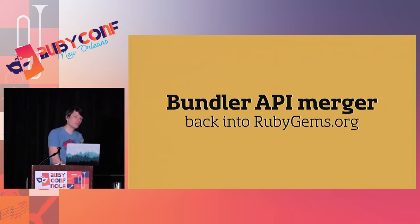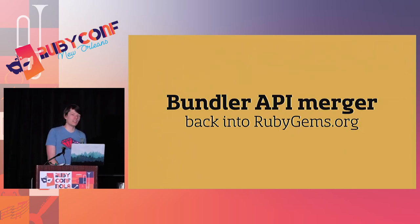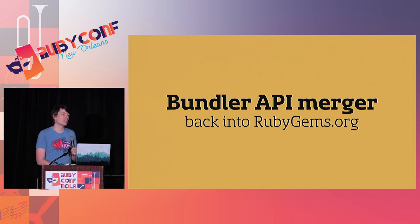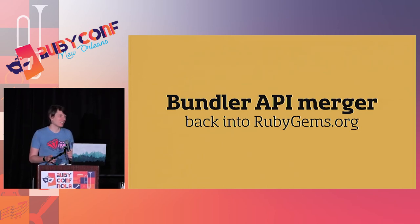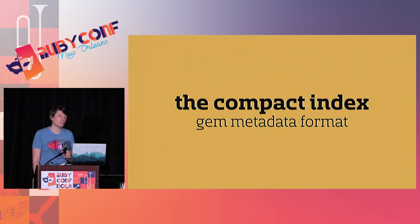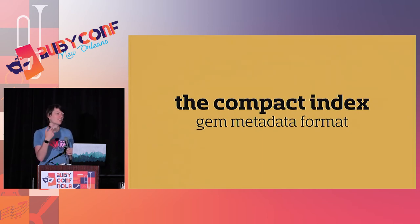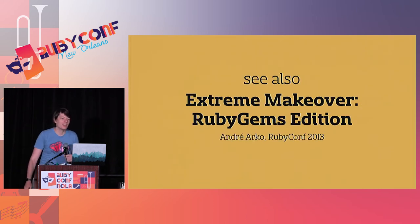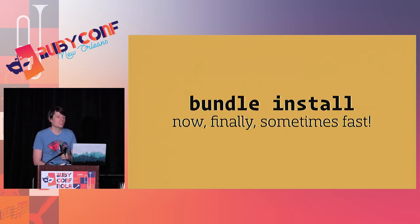We were also able to move the Bundler API back into RubyGems.org — it's no longer a standalone application. Thanks to people actively doing ops, the new RubyGems can handle the 10x increase in traffic from the API and it's not a big deal. We finished the compact index, which is a way of telling Bundler users about gems without infinitely recursive round-tripping — you can just keep a copy of the list of gems on your computer and don't have to get it again every time. For more detail, check out my talk 'Extreme Makeover: RubyGems Edition' from RubyConf 2013. Bundle install — finally, sometimes, now fast.